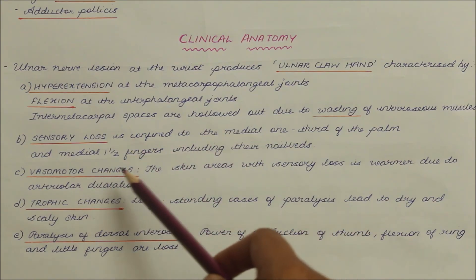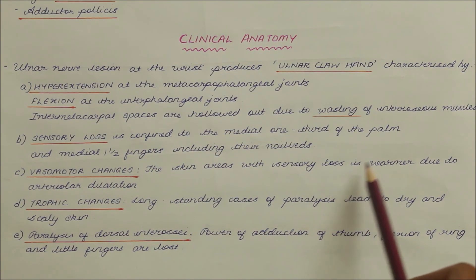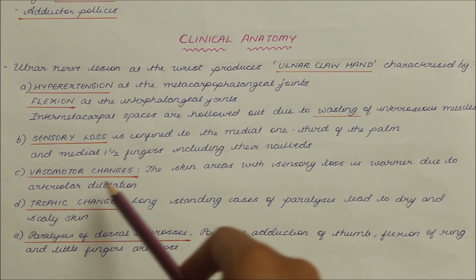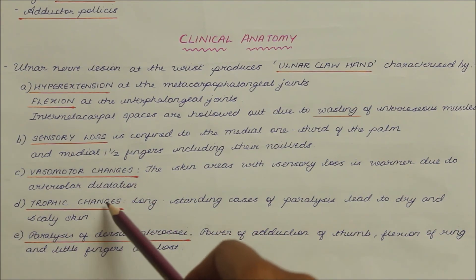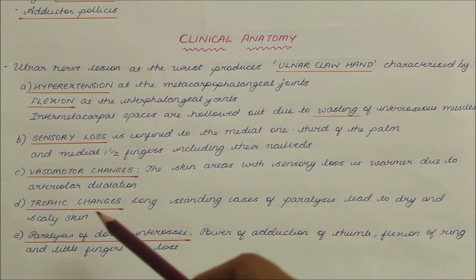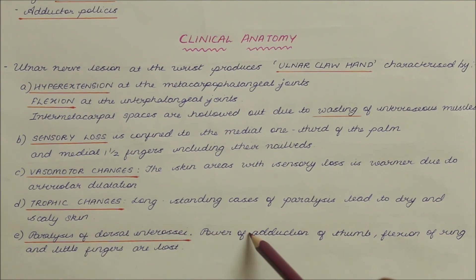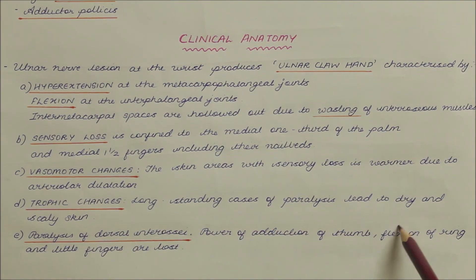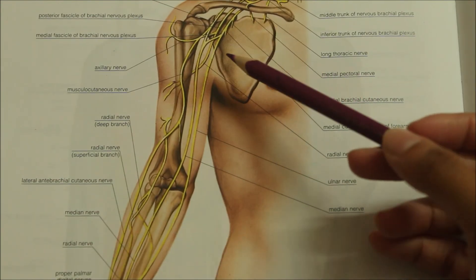The vasomotor changes include that the skin areas with sensory loss are warmer due to arteriolar dilatation. The trophic changes are that long-standing cases of paralysis lead to dry and scaly skin. The paralysis of the dorsal interossei and the loss of power of adduction of the thumb, and flexion of the ring and little fingers, are also observed.